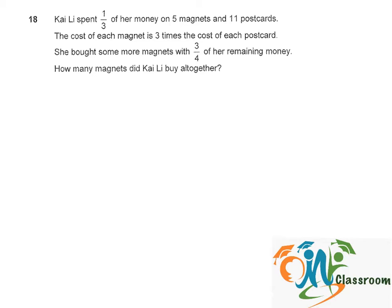So we can represent this question with a model. In total, Kylie has 3 units and she used one-third of her money to buy 5 magnets and 11 postcards.